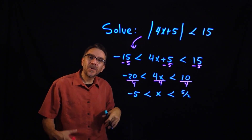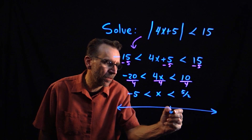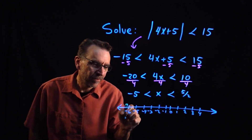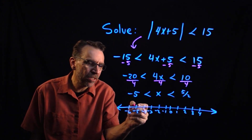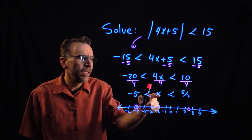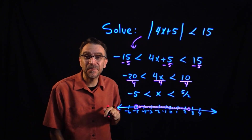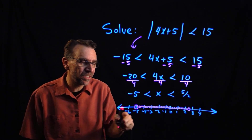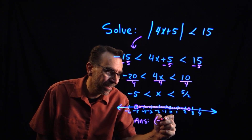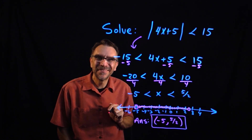That's our answer, but we also want to graph our solutions on a number line. For the lower bound, negative 5, I'll choose an open dot because of the strict inequality — there's no equal sign. The upper bound is two and a half, so open dot there as well, and then shade everything in between. In interval notation, we use parentheses — non-inclusive — so that's negative 5 to 5/2. That's infinitely many x values that solve the original inequality.